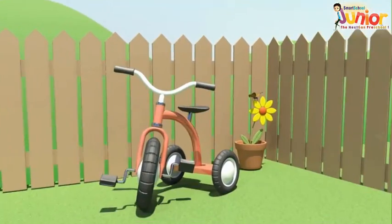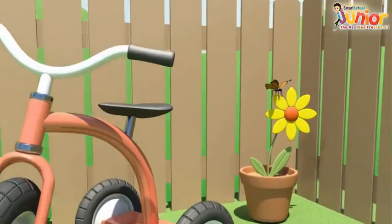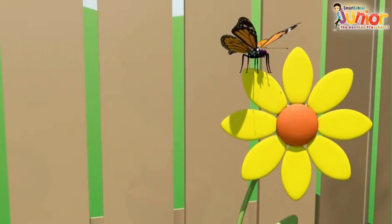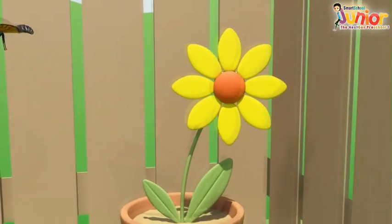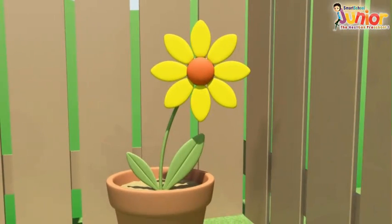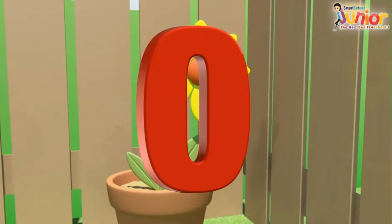Let us see this. Here you have one butterfly on the flower. Oh, look, the butterfly flies away. Now, there is no butterfly on the flower. Or should I say, there is zero butterfly on the flower.